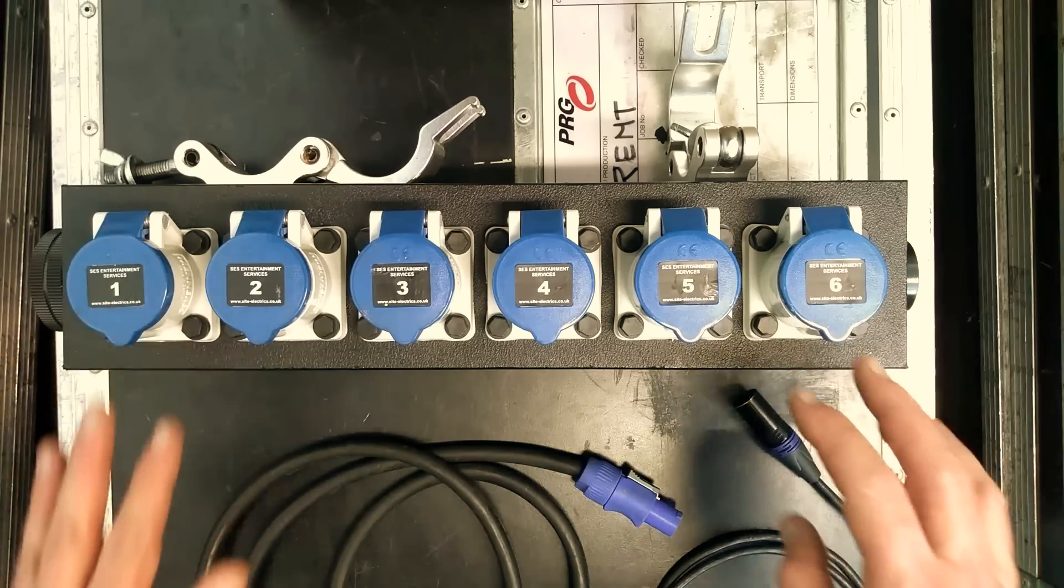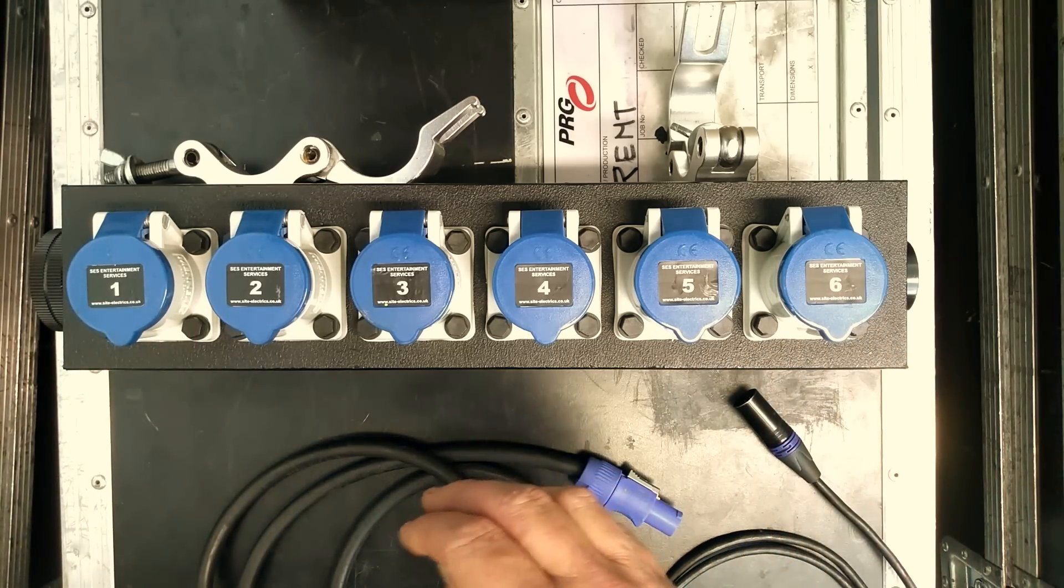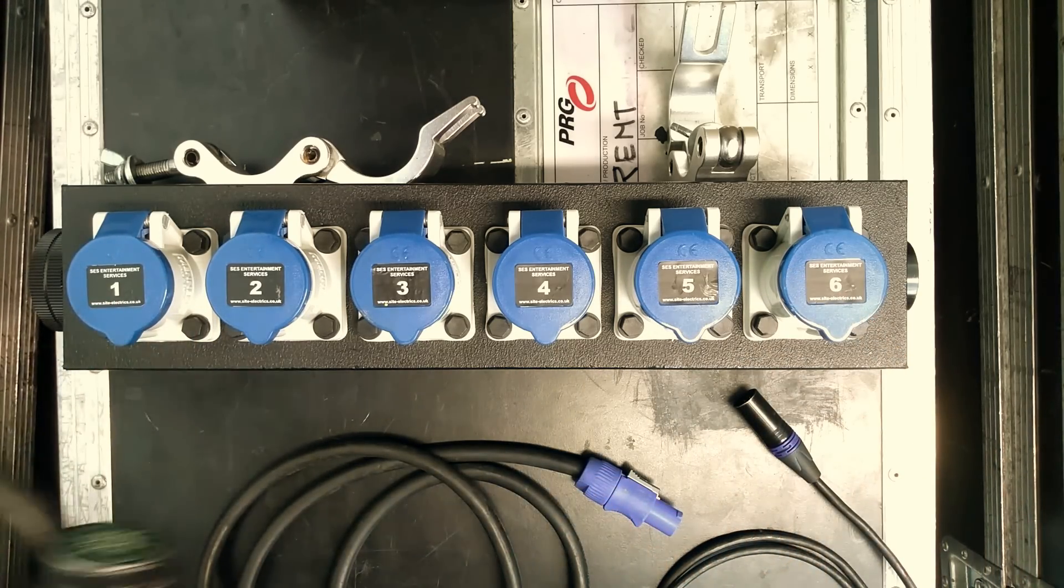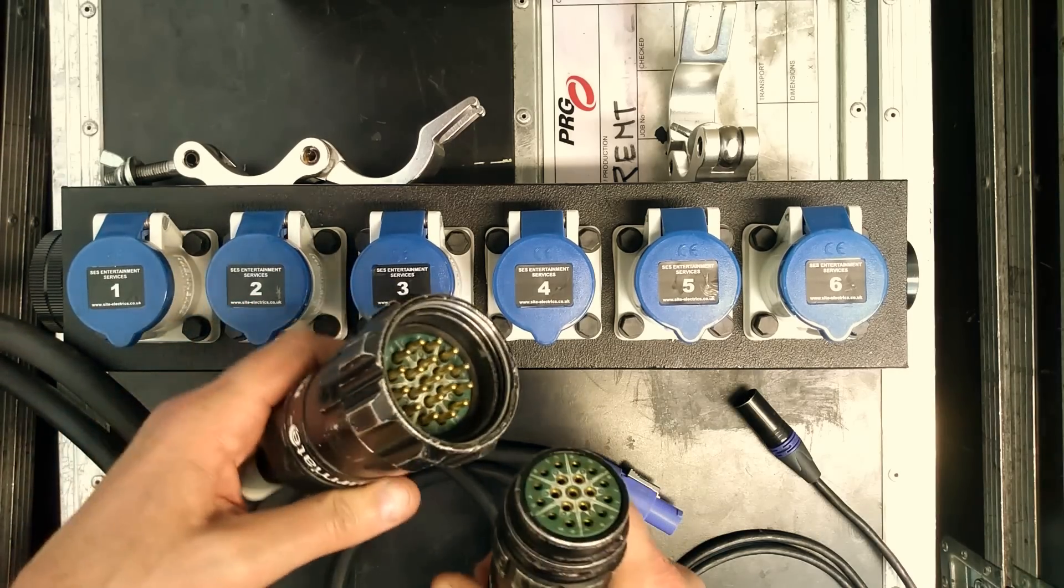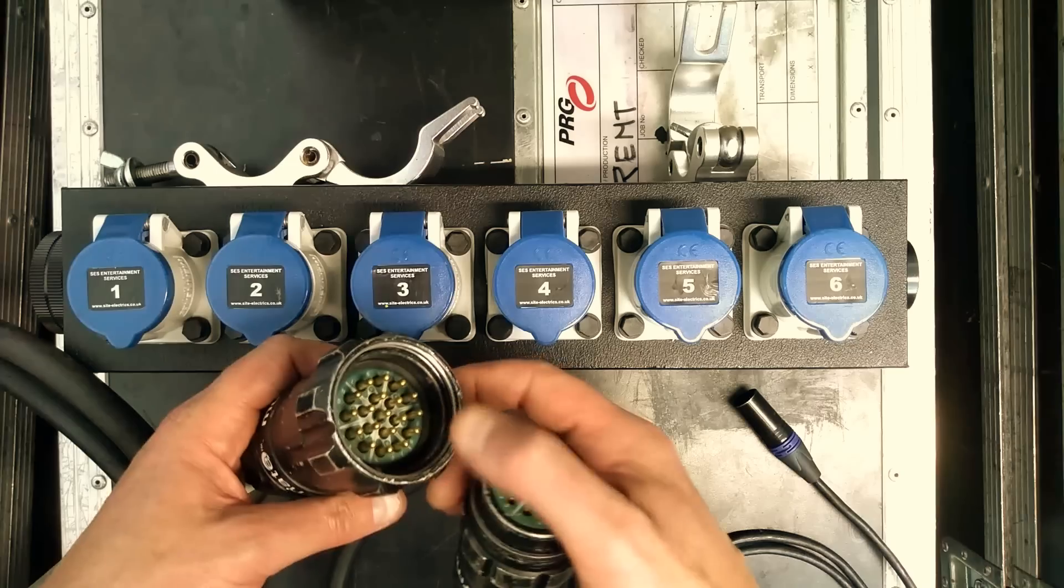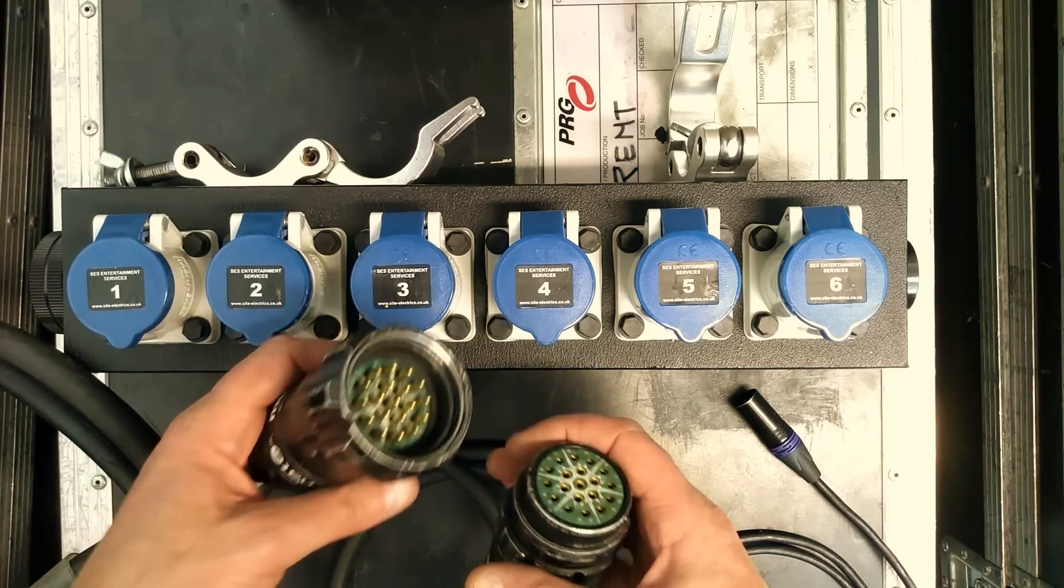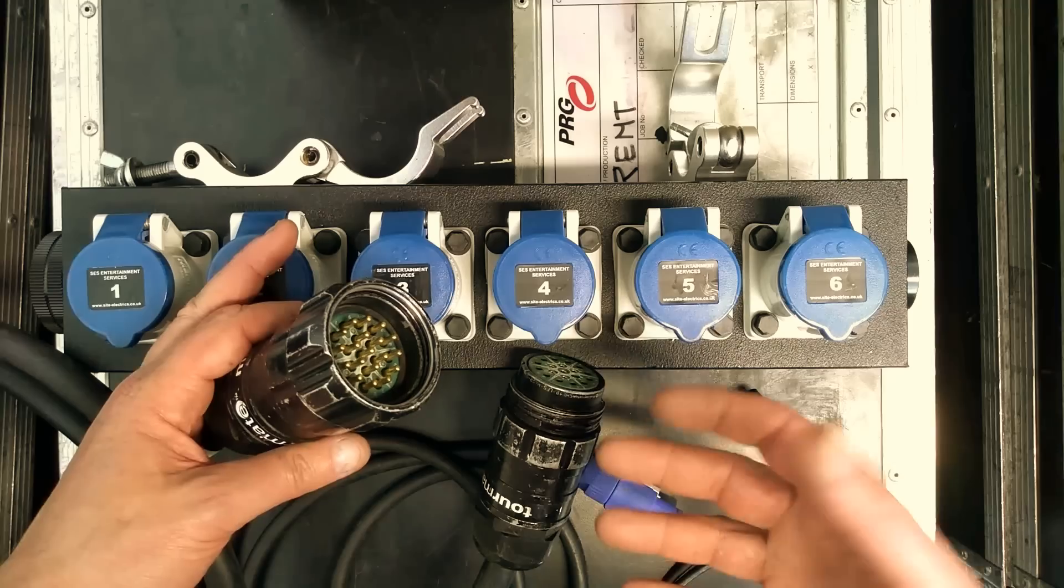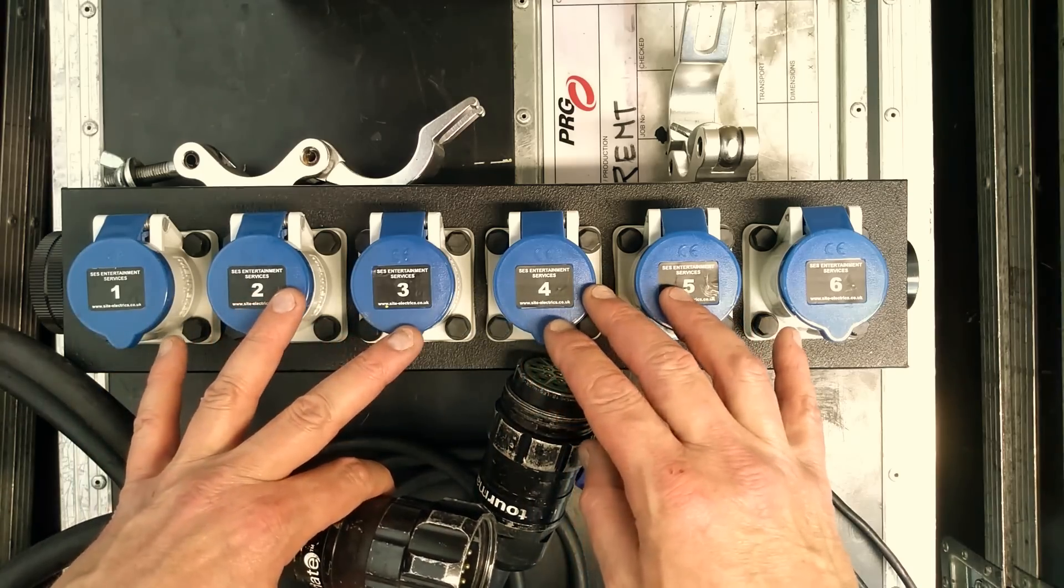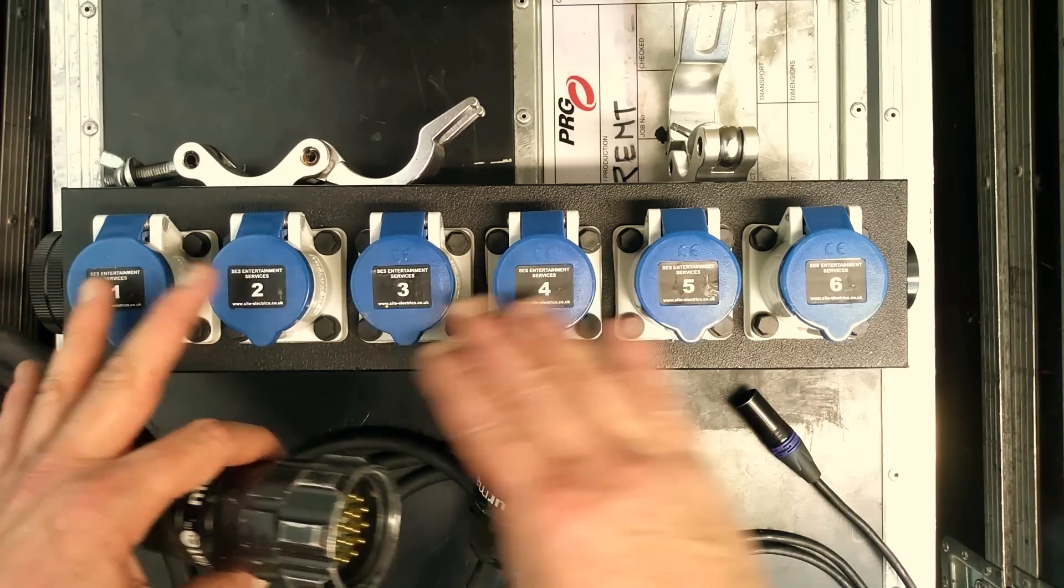And the power distribution usually comes across in multiples of six circuits through a type of cable that we call Socapex. It's basically a 19-pin connector that the entertainment industry adopted because just at the time they were looking for something that could handle six circuits.